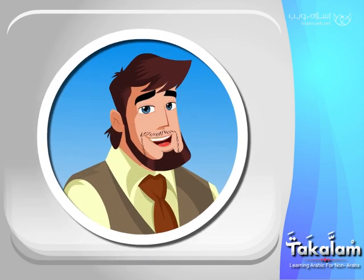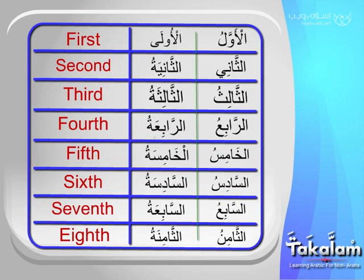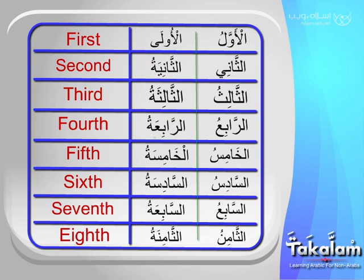Now let's learn some ordinal numbers, for both masculine and feminine. First would be الأول or الأولى. Second: الثاني, الثانية. Third: الثالث, الثالثة.